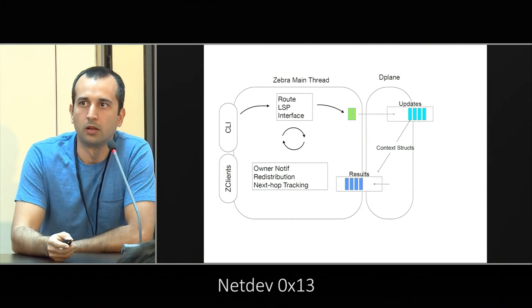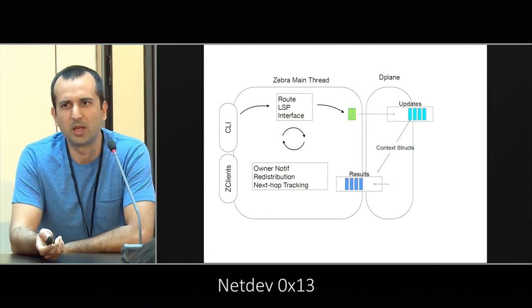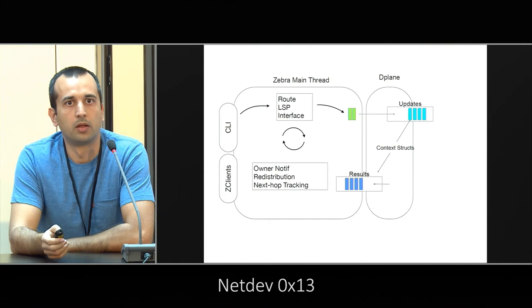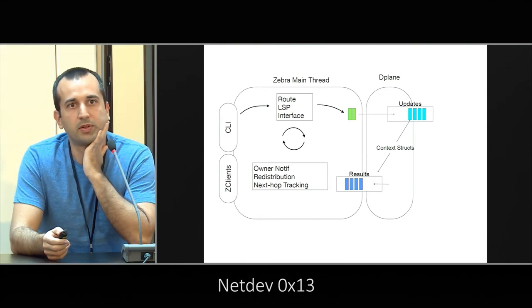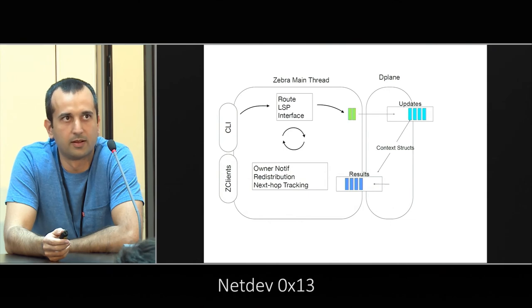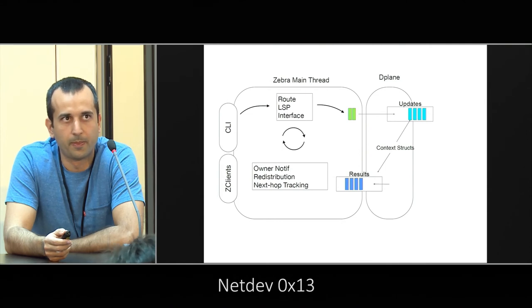Question: Are there any routing protocol clients that actually use the feedback path — the successful installation of routes? Answer: That's a very good question. Currently the infrastructure is there — as an upper-level protocol you can register with Zebra to be notified when your route installs, fails, or changes status. However, only one daemon actually uses that currently. The feedback mechanism for protocols like RIP and BGP needs to be there but just hasn't been implemented yet. That's in progress, but the infrastructure exists — someone needs to go write it. There is actually a pull request for BGP to take advantage of it, but it's running into some other issues.